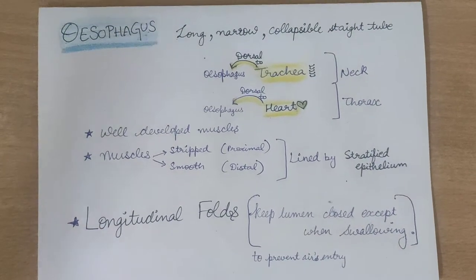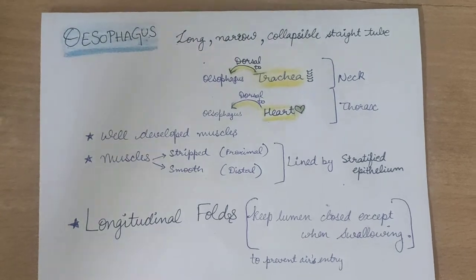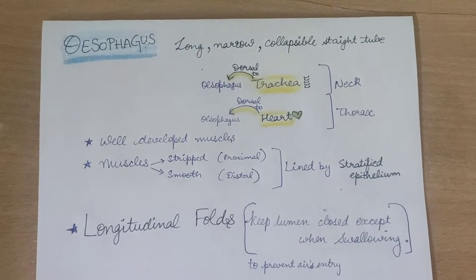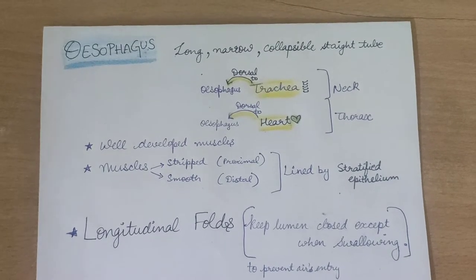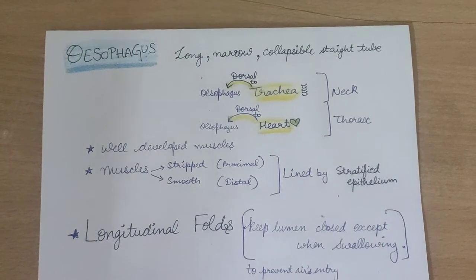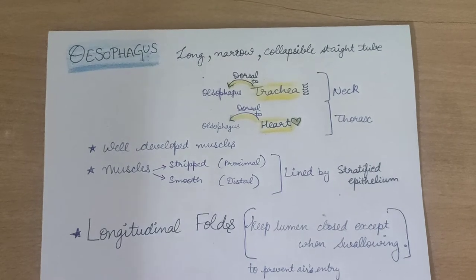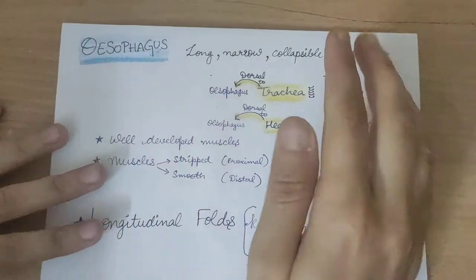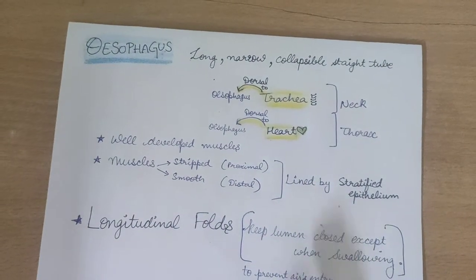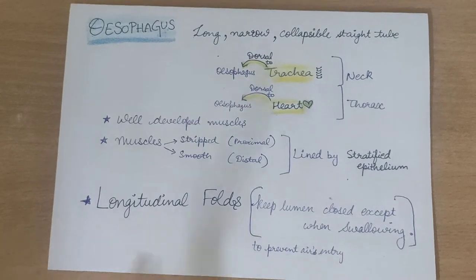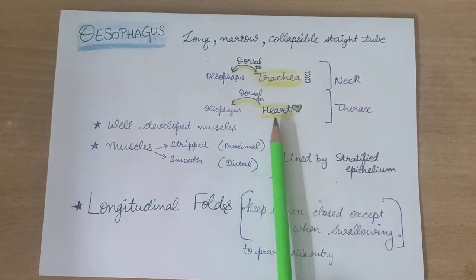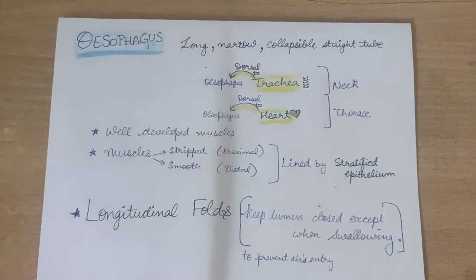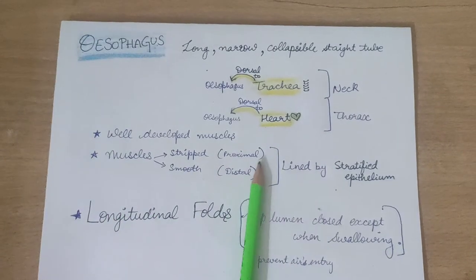The pharynx leads into the esophagus, which is a long, narrow, collapsible, straight tube — unlike the trachea which has cartilaginous rings and cannot collapse. In the neck region, the esophagus lies dorsal to the trachea; in the thorax region, it lies dorsal to the heart. It has well-developed muscles to pass food from the buccal cavity to the stomach. The proximal region has striped (striated) muscles, while the distal region has smooth muscles.